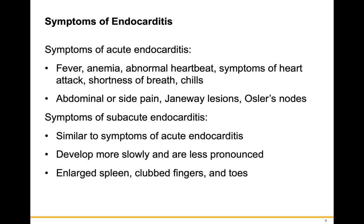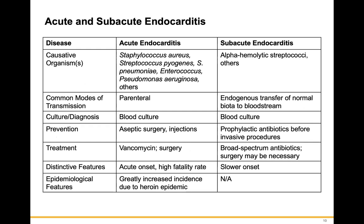Additional symptoms of subacute endocarditis include enlarged spleen and clubbing of fingers and toes. Causes of acute endocarditis include staph and strep species, which are very common organisms that colonize many areas of the body. Subacute endocarditis is always caused by alpha-hemolytic streptococci species.